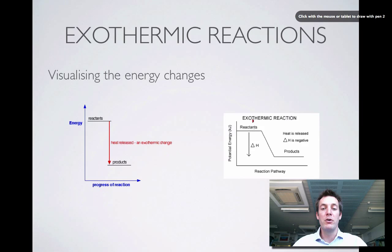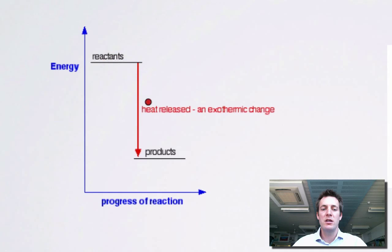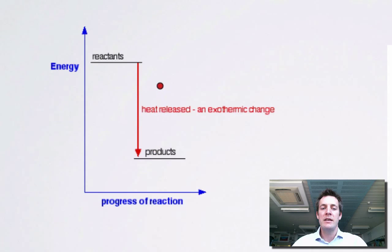Both of these energy level diagrams are talking about exothermic reactions — ones that get hot. We start with our reactants, which turn into products. The reactants are on one level of the diagram and the products on another, lower level — the energy of the system has gone down, or more precisely, its enthalpy has gone down. In losing that potential, it's turned into heat, so the heat is released and the reaction gets hot.